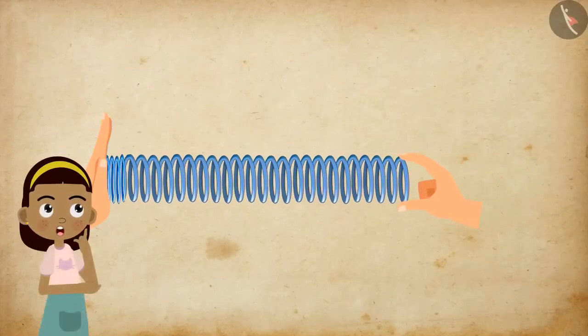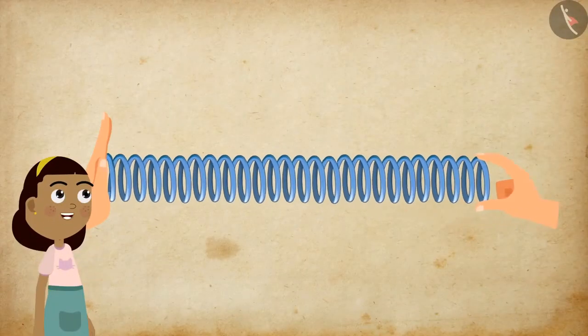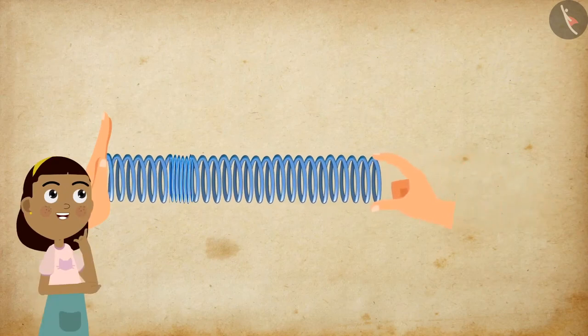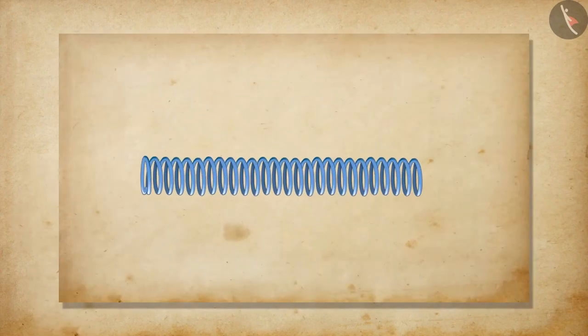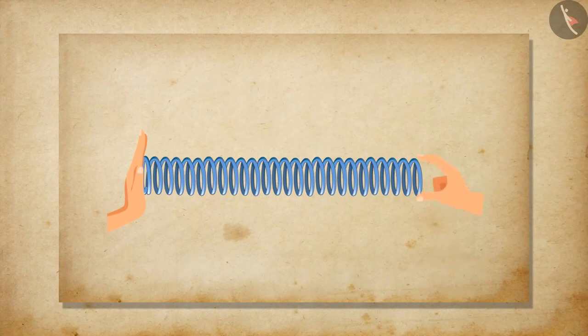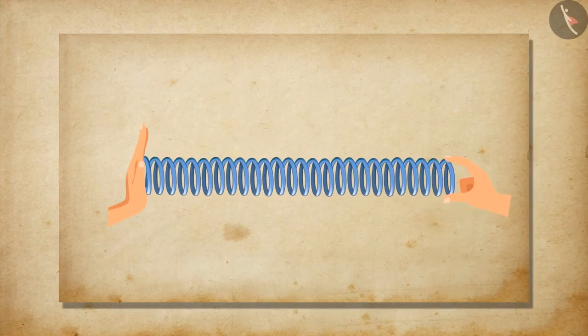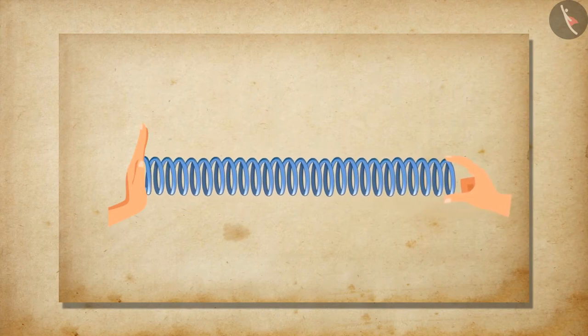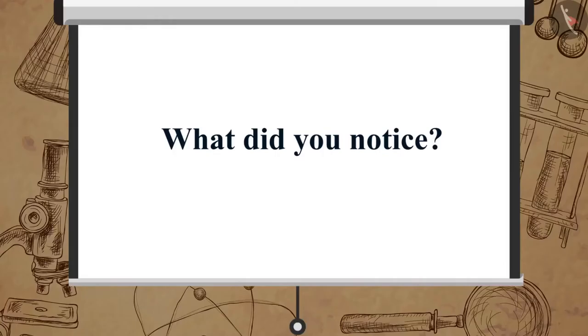Now let us perform another activity to understand the sound wave. Take a slinky and ask your friend to hold one of its ends. You hold the other end of the slinky. Stretch the slinky and then give a sharp push towards your friend. What did you notice?